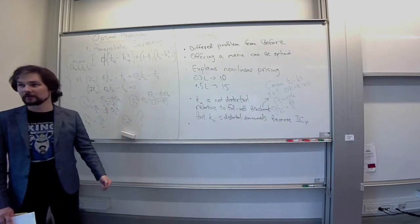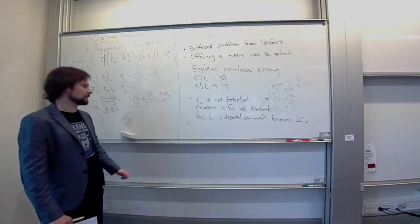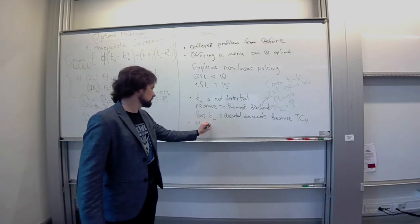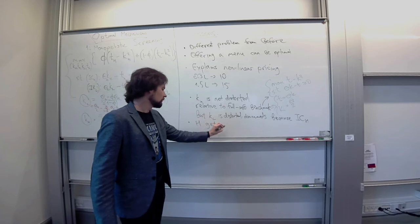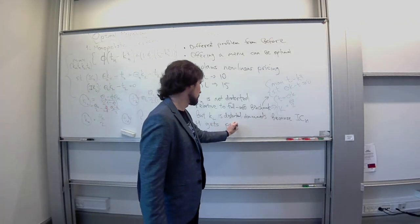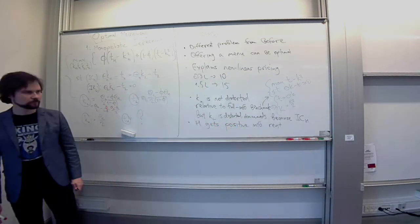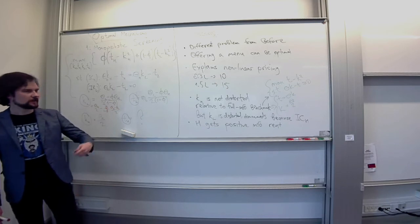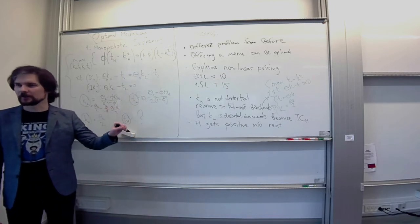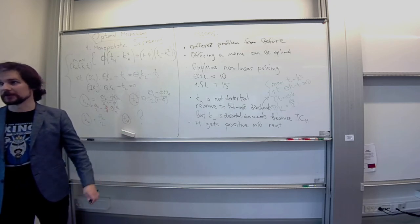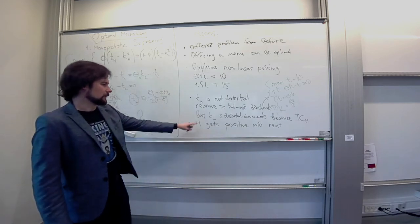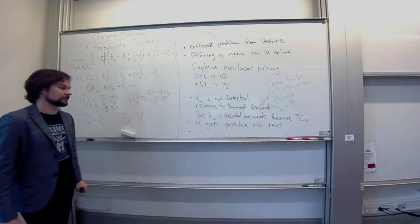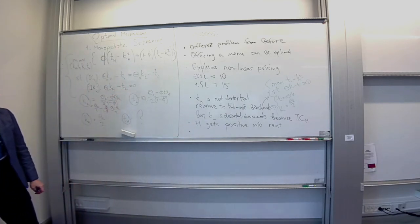Because this high type can hide, can pretend to be low type, they get to leave a little bit of money for themselves. So, H gets positive information rent. And here by positive I should mean weakly positive, because ignoring the low type and just extracting all surplus of the high type is always an option. But if both types are served, then H gets strictly positive information rent.